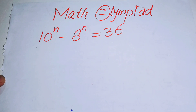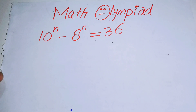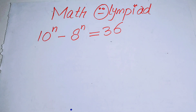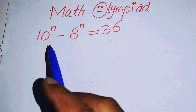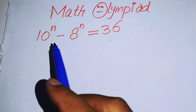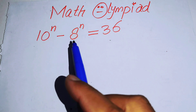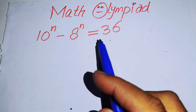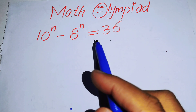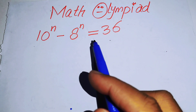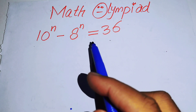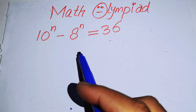Hello everyone, welcome back to the Map of Mathematics. In this video we are going to solve this nice algebra problem: 10 to the power of n minus 8 to the power of n is equal to 36, and we will solve this problem for the values of n.